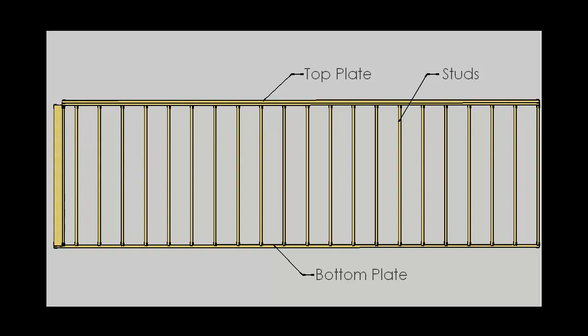What do I mean when I say 2x4? I'm referring to the dimensional thickness and width of the framing member. In this case, the thickness of the member would be 2 inches, and the width would be 4 inches.